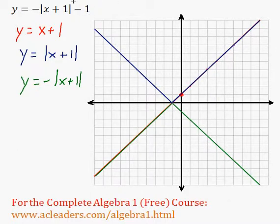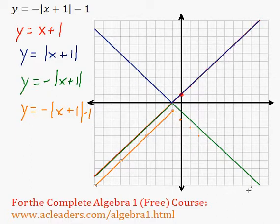And then finally, we're going to subtract 1. Let me pick a different color here. So we will have negative absolute value of x plus 1 minus 1. So every point is just going to go down by 1 unit. Every point goes down by 1 unit. Now we can just connect the dots. And over here, we have the final answer.